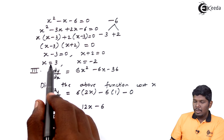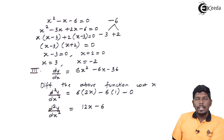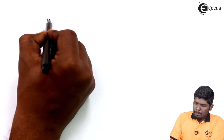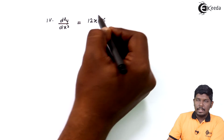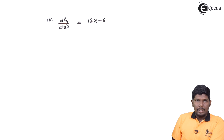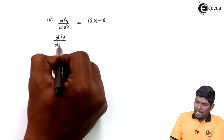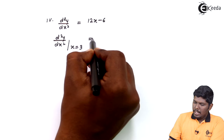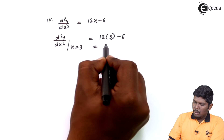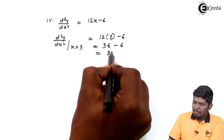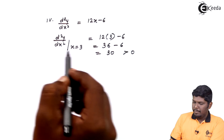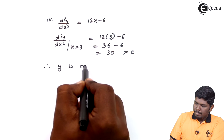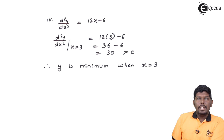In step number 4, we substitute the values of x into d²y/dx² = 12x - 6 to check for minimum or maximum. At x = 3: d²y/dx² = 12(3) - 6 = 36 - 6 = 30. Since 30 > 0, the function is minimum when x = 3.